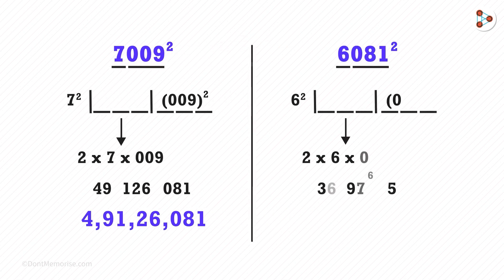Similarly, here is the working of 6081 the whole squared. After solving this, we get this answer.